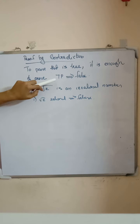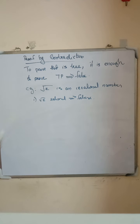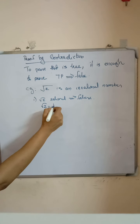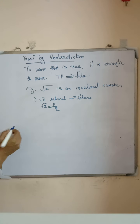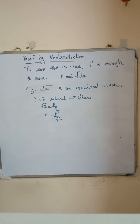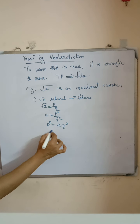Now we discuss proof by contradiction. To prove that P is true, it is enough to prove that negation P is false. We have to prove P is true, so we prove that ¬P is false — that is the method of contradiction. For example, we want to prove the statement that √2 is an irrational number. Let us assume that √2 is a rational number — that is a false statement.